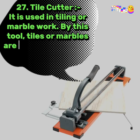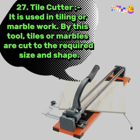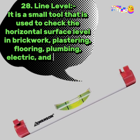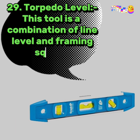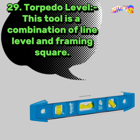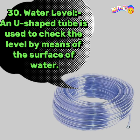27. Tile Cutter: it is used in tiling or marble work. By this tool, tiles or marbles are cut to the required size and shape. 28. Line Level: it is a small tool used to check the horizontal surface level in brickwork, plastering, flooring, plumbing, electric, and tile works. 29. Torpedo Level: this tool is a combination of line level and framing square. 30. Water Level: a U-shaped tube used to check the level by means of the surface of water.